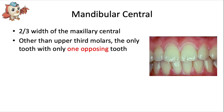This tooth is unique for a few reasons. In an ideal occlusion, like what you would see represented by a plastic model of teeth, the four central incisors should share the midline. The mandibular central incisor should take up about two-thirds the width of a maxillary central incisor. Other than the upper third molars, the mandibular centrals are the only teeth in the mouth that share an occlusal contact with only one opposing tooth. Every other tooth in the mouth should occlude or oppose two other teeth, and that's due to the reduced mesiodistal width of the mandibular central when related to the maxillary central.